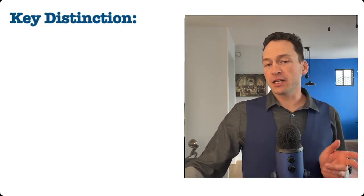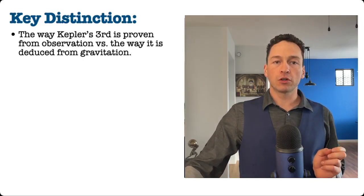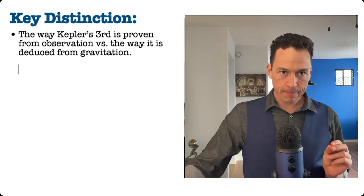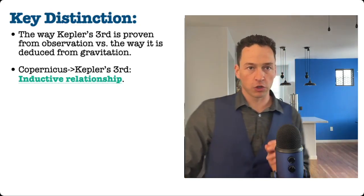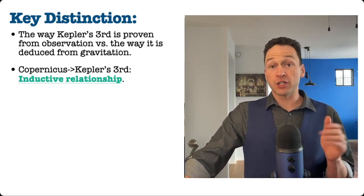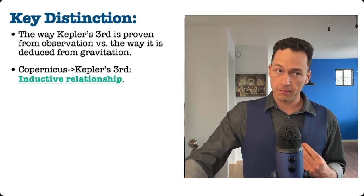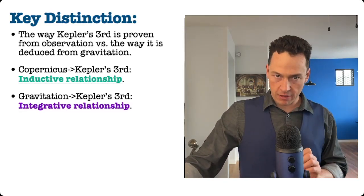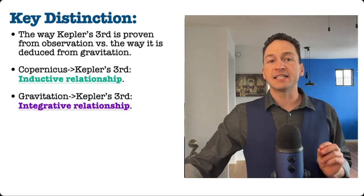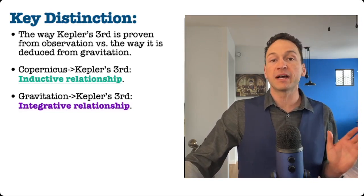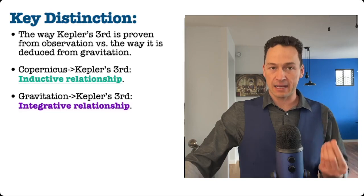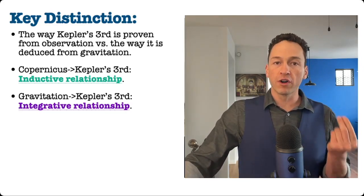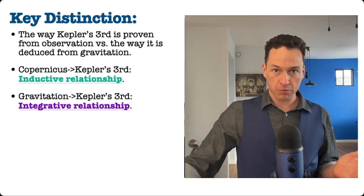This inductive progression leads us to a key distinction. The way Kepler's third is proven from observation must be distinguished from the way Kepler's third is deducible from gravitation. The relationship between the earlier knowledge of Copernicus and Kepler's third is an inductive dependence — Kepler used observation and prior knowledge of astronomy to induce his principle. In contrast, the deduction from Newton's principle of gravitation to Kepler's third is an integrative relationship. An integrative relationship of this kind does not prove the proposition it deduces — it was already proven by Kepler. Instead, it identifies conditions which underlie Kepler's third law. Deducing Kepler's third from gravitation and the principles of motion shows that the planets move according to Kepler's third as a result of gravitation and of the principles of motion.